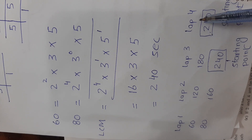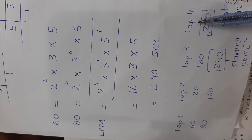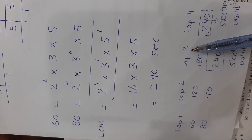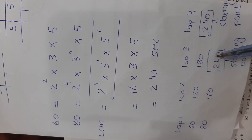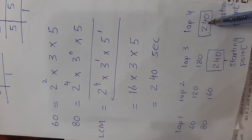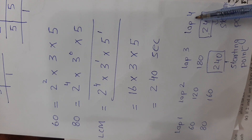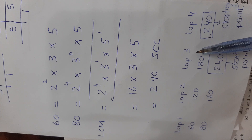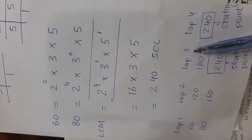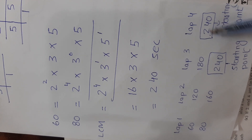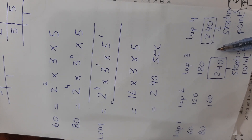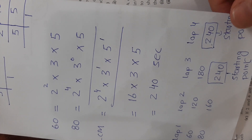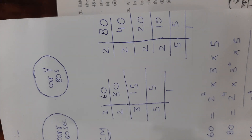After 240 seconds, both cars are at the starting point simultaneously. Approach 2 is to find the LCM of 60 and 80.